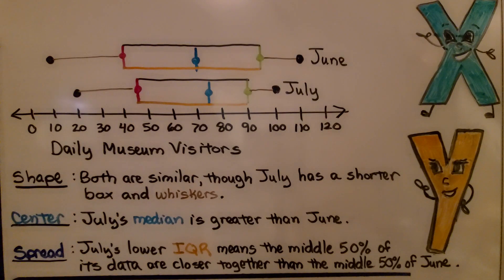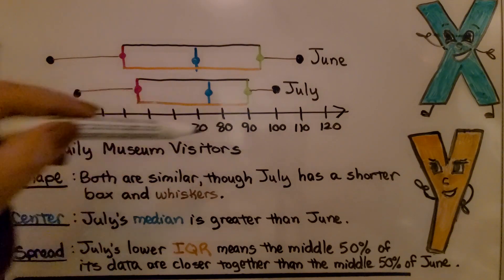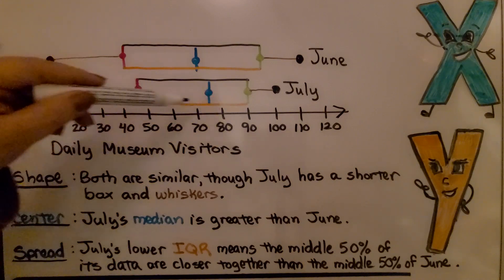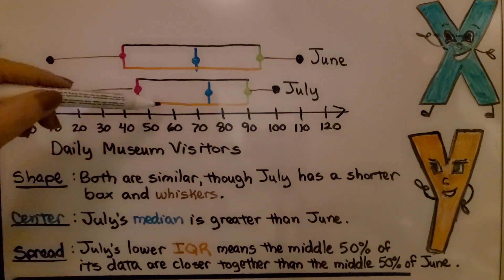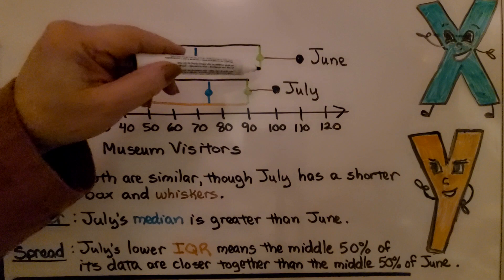And the spread, July's lower IQR, interquartile range, means the middle 50% of its data are closer together than the middle 50% of June. Take a look at July. It's going from about 45 to 90. So this middle 50% of its data is closer together than going from here at 40 to about 95.